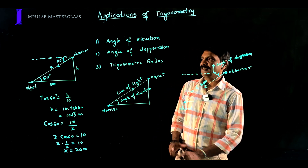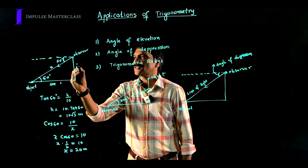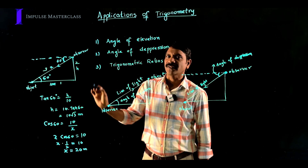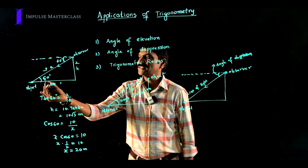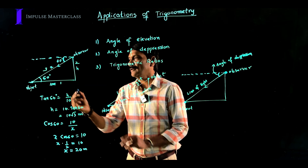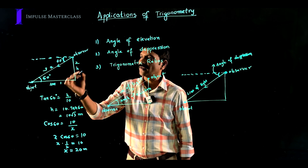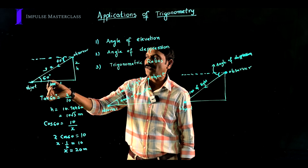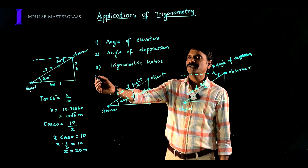The important thing you need to learn here is that a right triangle has 4 parameters — 3 sides and 1 angle. Among them, if 2 parameters are given, for example one angle and one side, we can find the remaining 2. Not only that — even if 2 sides are given, we can find the angle. So if any 2 parameters are given, the remaining 2 parameters can be found using these concepts.